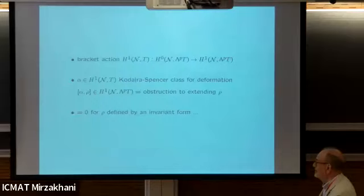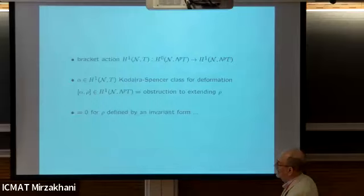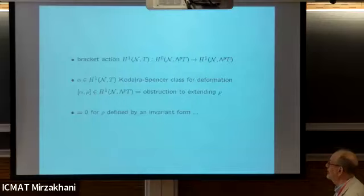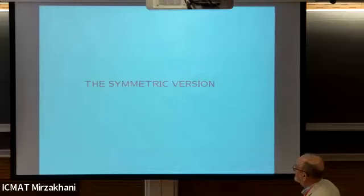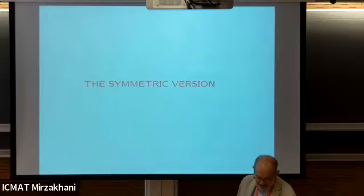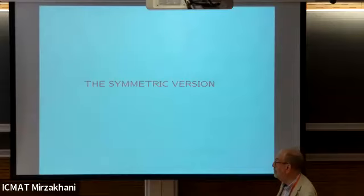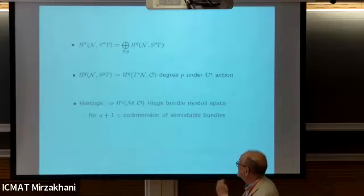It's possible that for some complex structures there are more polyvector fields than those given by this process, and they may not deform. But certainly these ones do deform under deformation, and therefore this bracket is even zero. So if we're asking how this commutative group acts on the tangential cohomology, it's useful to look at the symmetric version as a point of comparison. We could look at the cohomology of the symmetric powers of the tangent sheaf instead of the exterior powers.